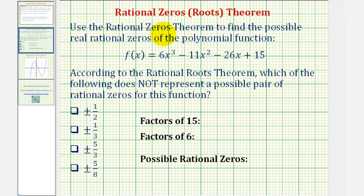We want to use the rational zeros, or rational roots theorem, to find the possible real rational zeros of the polynomial function given here.